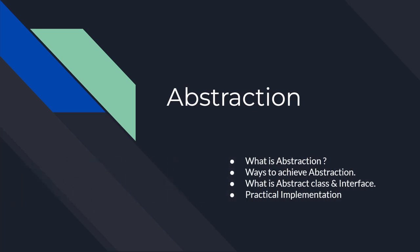In this topic, we will basically focus on four main things: what is abstraction, ways to achieve abstraction, what is the abstract class and interface, and the practical implementation of abstraction.